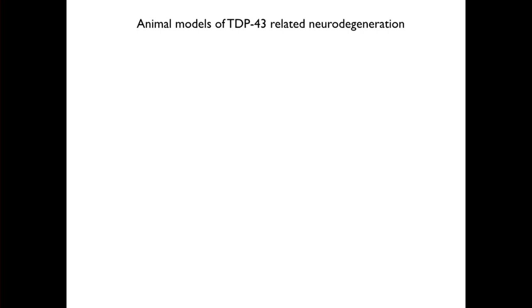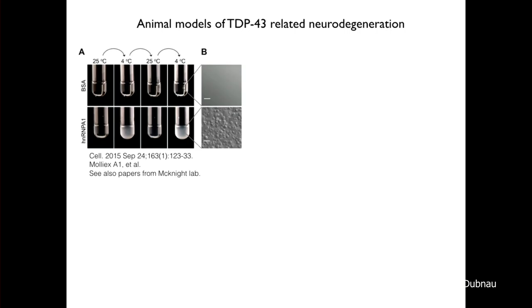How do we model these diseases in animals? The problem is that the majority of ALS patients — about 90% — are sporadic with no known mutation. TDP-43 protein of normal amino acid sequence accumulates in the cytoplasm, forms inclusions, and initiates pathology. It takes decades to appear sporadically in humans. A conceptual framework for modeling this has come from recent literature suggesting that low-complexity domain-containing proteins have a propensity to undergo phase transitions that are both temperature- and concentration-dependent.